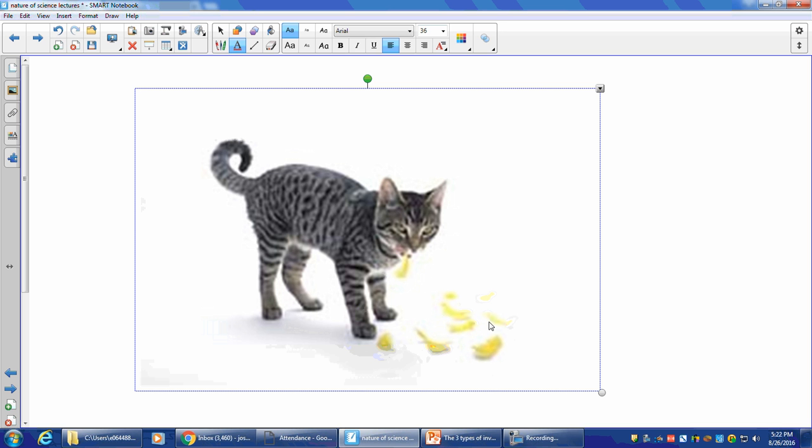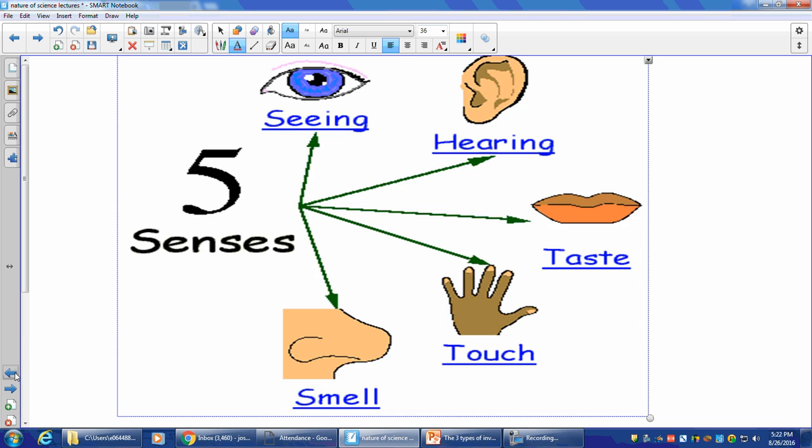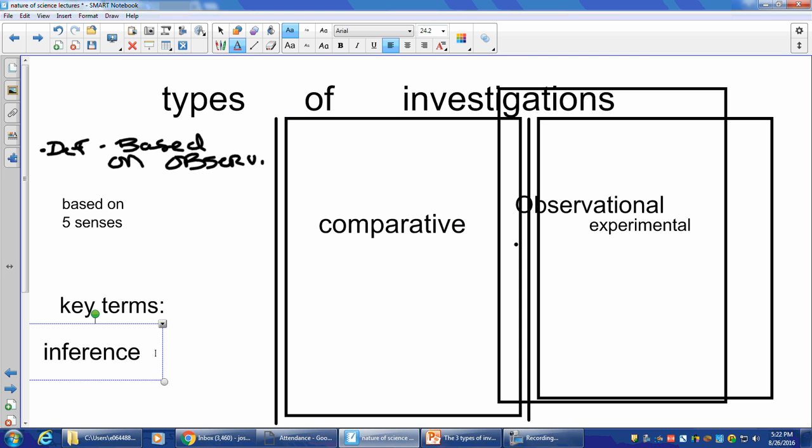This is a dead canary. So what could you infer? What's the conclusion you could come to? You could probably conclude that the cat ate the bird. That's an inference you made based on a visual investigation. So inference, that's what that means. You can write that down for yourself if you want.